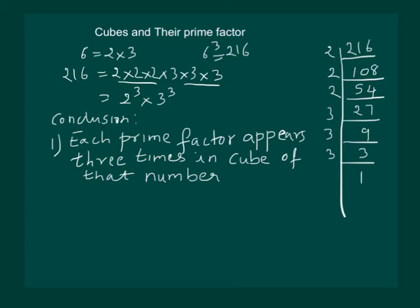Hence, we come to the conclusion that each prime factor appears 3 times in cube of that number. And, when we cubed 6, we got 2 cube and 3 cube. So, each prime factor appeared 3 times in the cube of that number.